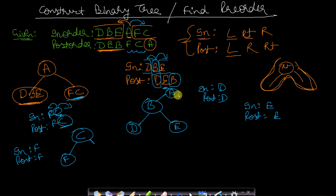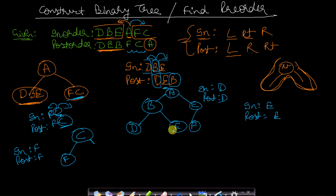C is connected to A, and C has F as its left child. This is the final constructed binary tree. Now let's traverse this tree to calculate the pre-order.